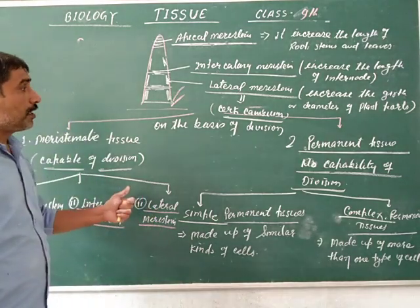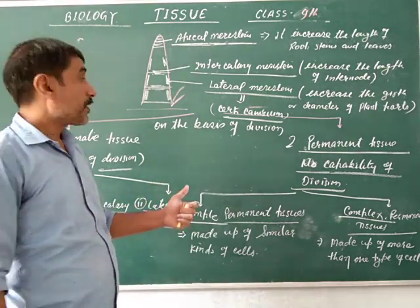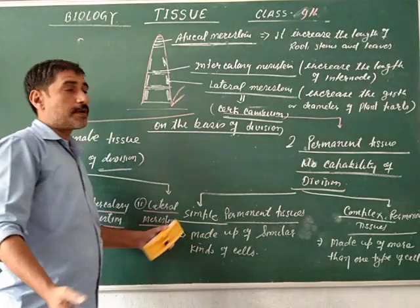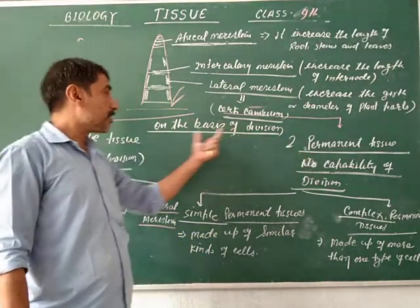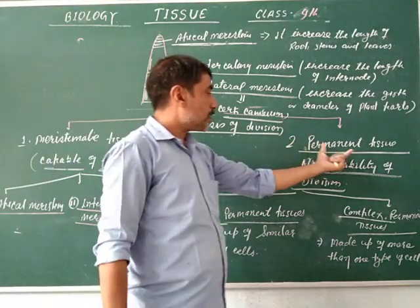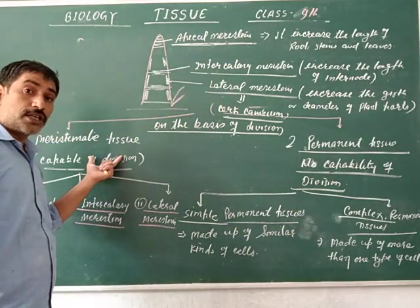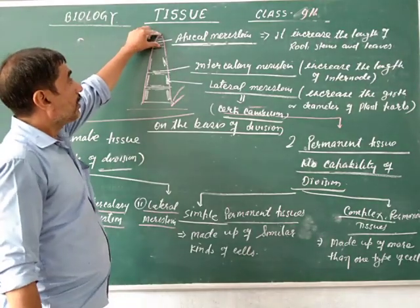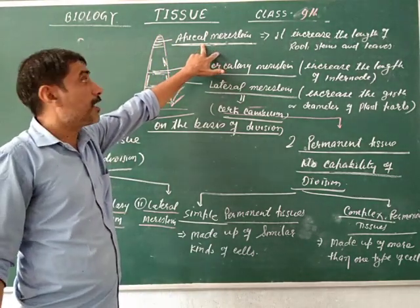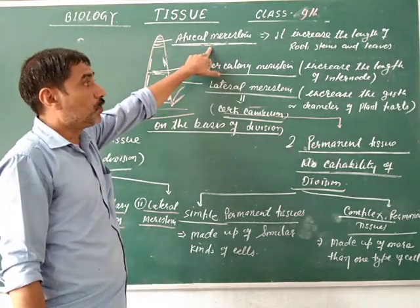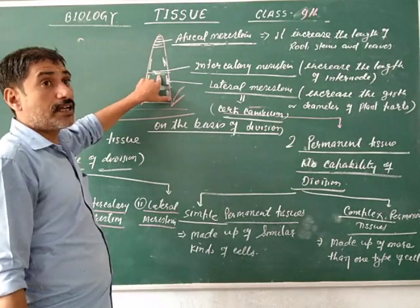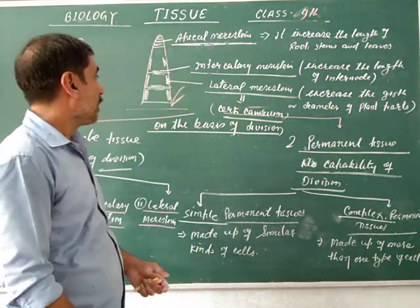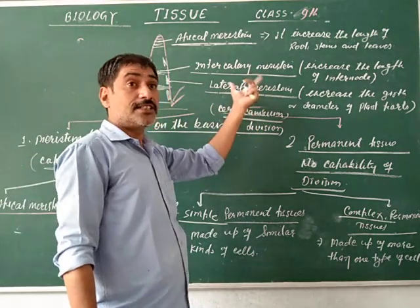Today we learned about what is tissue, what is histology, what is division of labor, and on the basis of division, different types of plant tissue such as meristematic tissue and permanent tissue. On the basis of position, meristematic tissue is classified into three groups: apical meristem, which increases length of root, stem and leaves; intercalary meristem, which increases the length of internodes; and lateral meristem, also known as cambium, which increases the girth of the plant. Thank you.